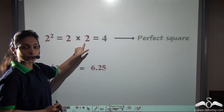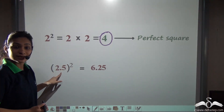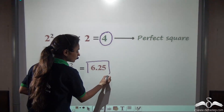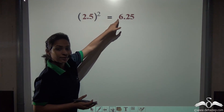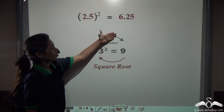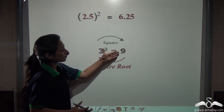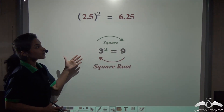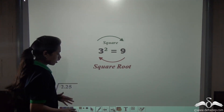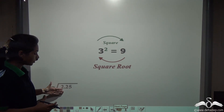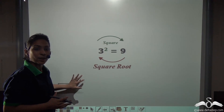We know that 2 squared, that is 2 into 2, gives us 4 which is a perfect square. So 4, a natural number, is a perfect square. Now even decimal numbers can be squared to get a square number. Now the inverse operation of a square is the square root. To find the square of 3 we square it and get 9; to get 3 back from 9 we square root 9. Similarly, squared decimal numbers can be square rooted to get back the decimal number. Suppose I ask you to find the square root of the decimal number 2.25 — you already know the long division method, but here we will use another method.